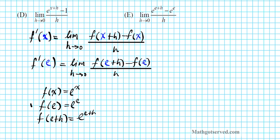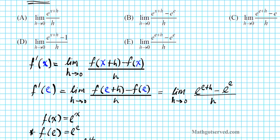So we'll just simply plug in f(e) and f(e + h) into this expression right here. So we're going to have the limit as h approaches 0 of f(e + h) is e to the e plus h minus f(e) is e to the e divided by h, and we can clearly see that our answer is option letter E.